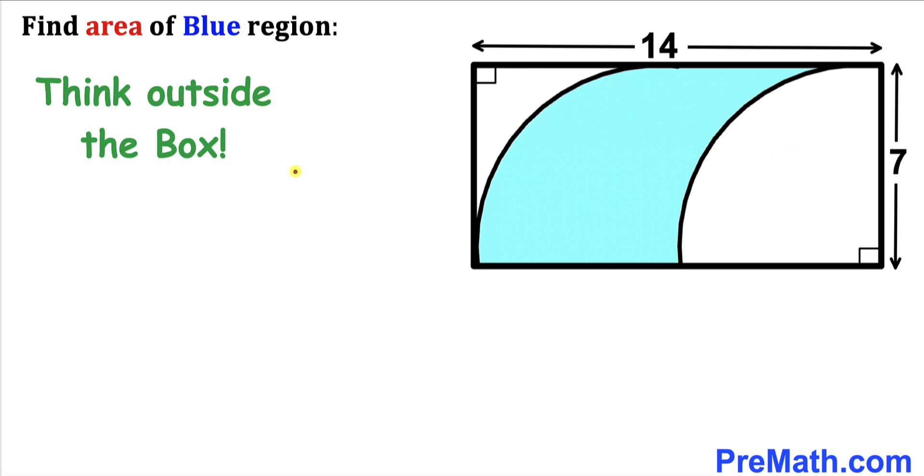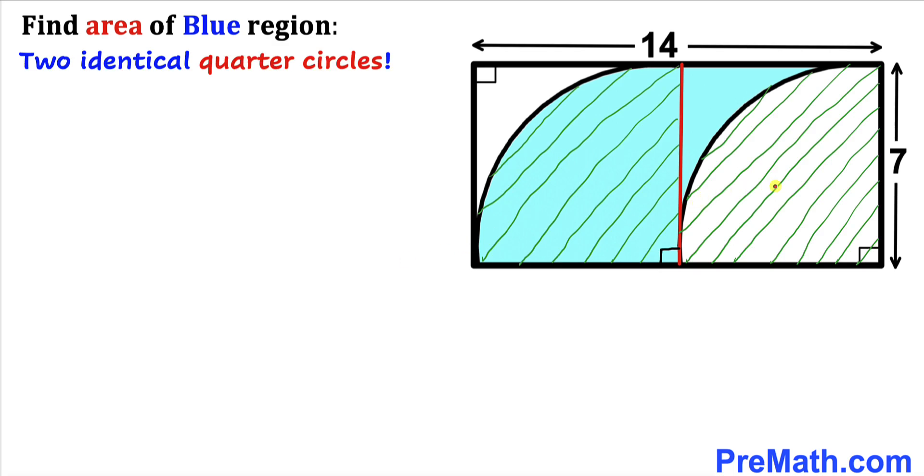In order to make our job easy we are going to think outside the box. So therefore we are going to drop the perpendicular as you can see in this diagram and as a result we get these two identical quarter circles. Now since we are dealing with this rectangle, that means this side length is going to be equal to this side length.